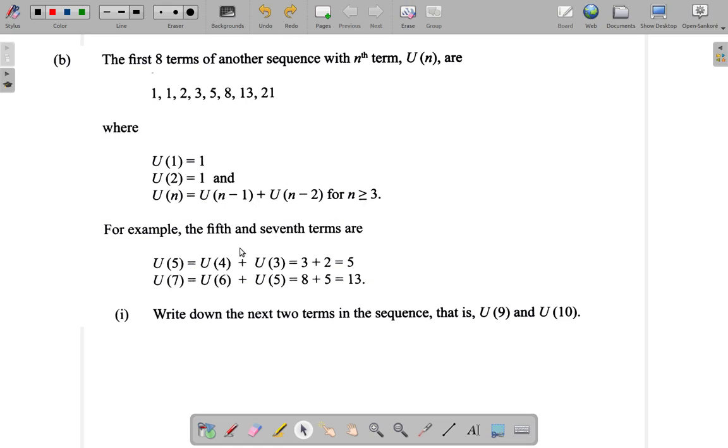For example, the fifth and seventh terms are: U(5) = U(4) + U(3), so 5-1 gives you 4, plus U(n-2) will be 5-2 is 3, which is U(4) + U(3) = 3 + 2. Because this is U1, U2, U3 was 2, U4 was 3, so U4 plus U3 is 5.